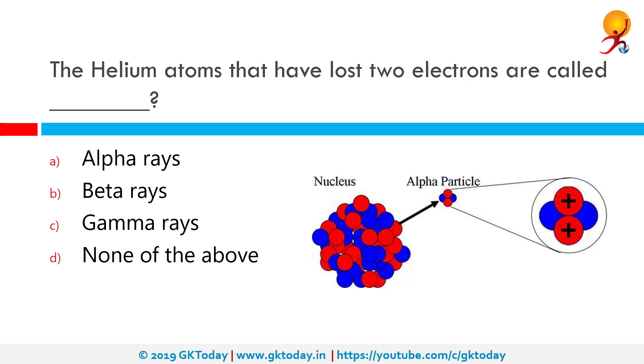The helium atoms that have lost two electrons are called alpha rays. Alpha rays are actually high speed particles. Early researchers tended to refer to any form of energetic radiation as rays, and the term is still used.